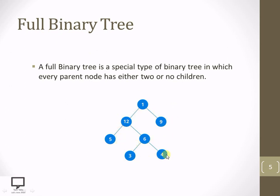Every node has either no child — the leaf nodes 5, 3, 4, and 9 — or exactly two children. Node 1 has children 12 and 9; node 12 has left child 5 and right child 6; node 6 has left child 3 and right child 4. So every parent node has either 2 or no children. If this condition is met, we can say the tree is a full binary tree.